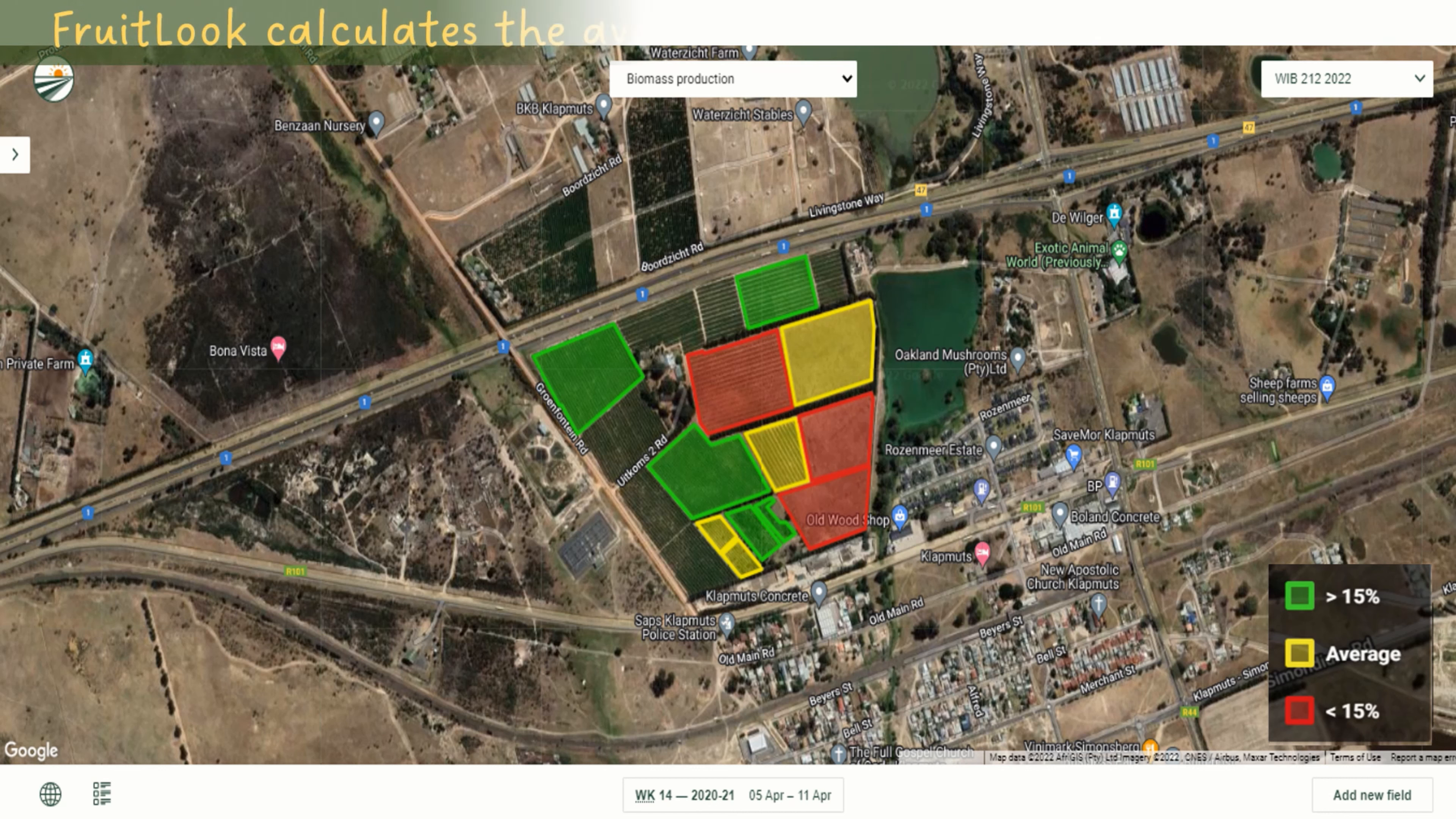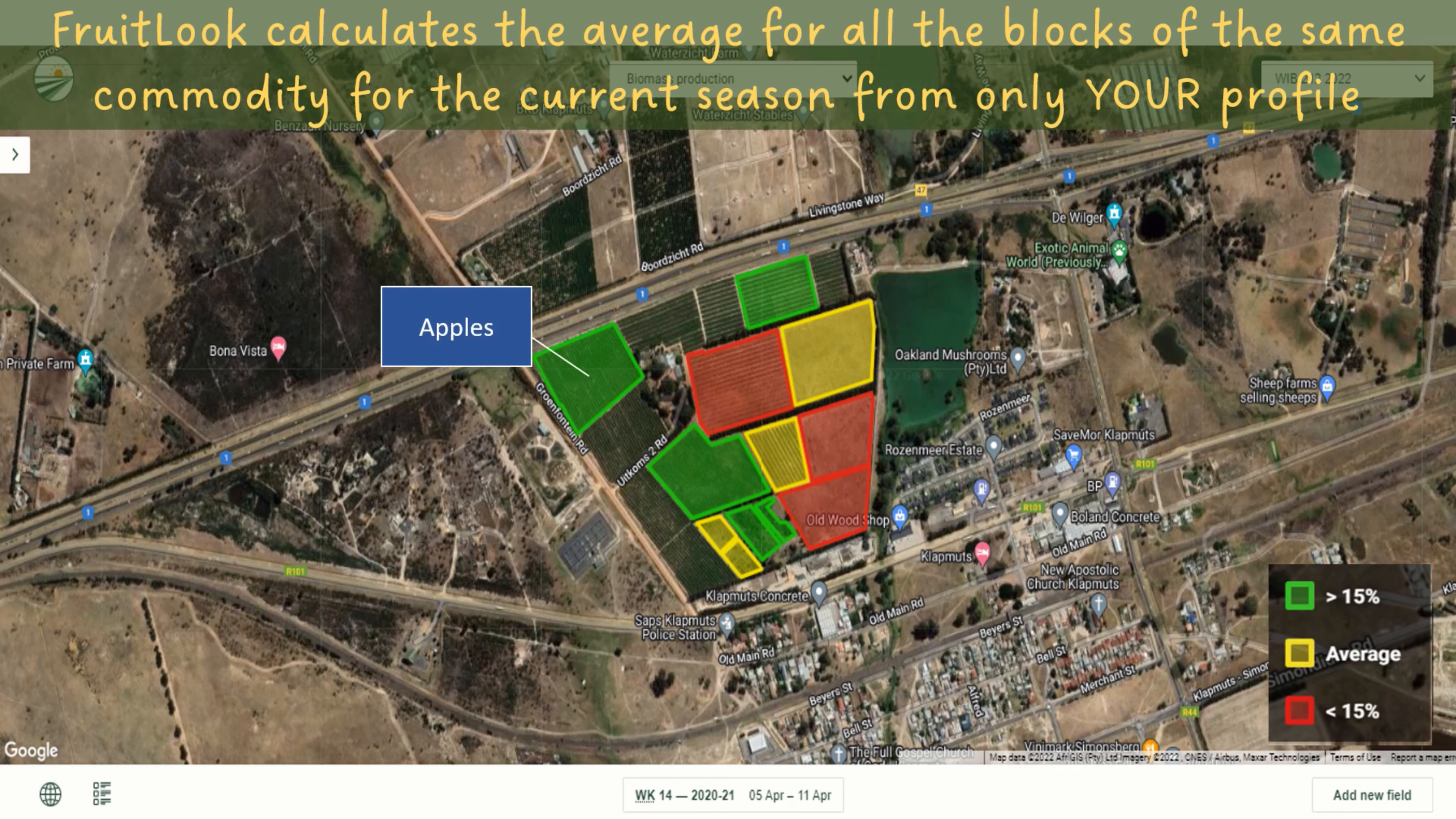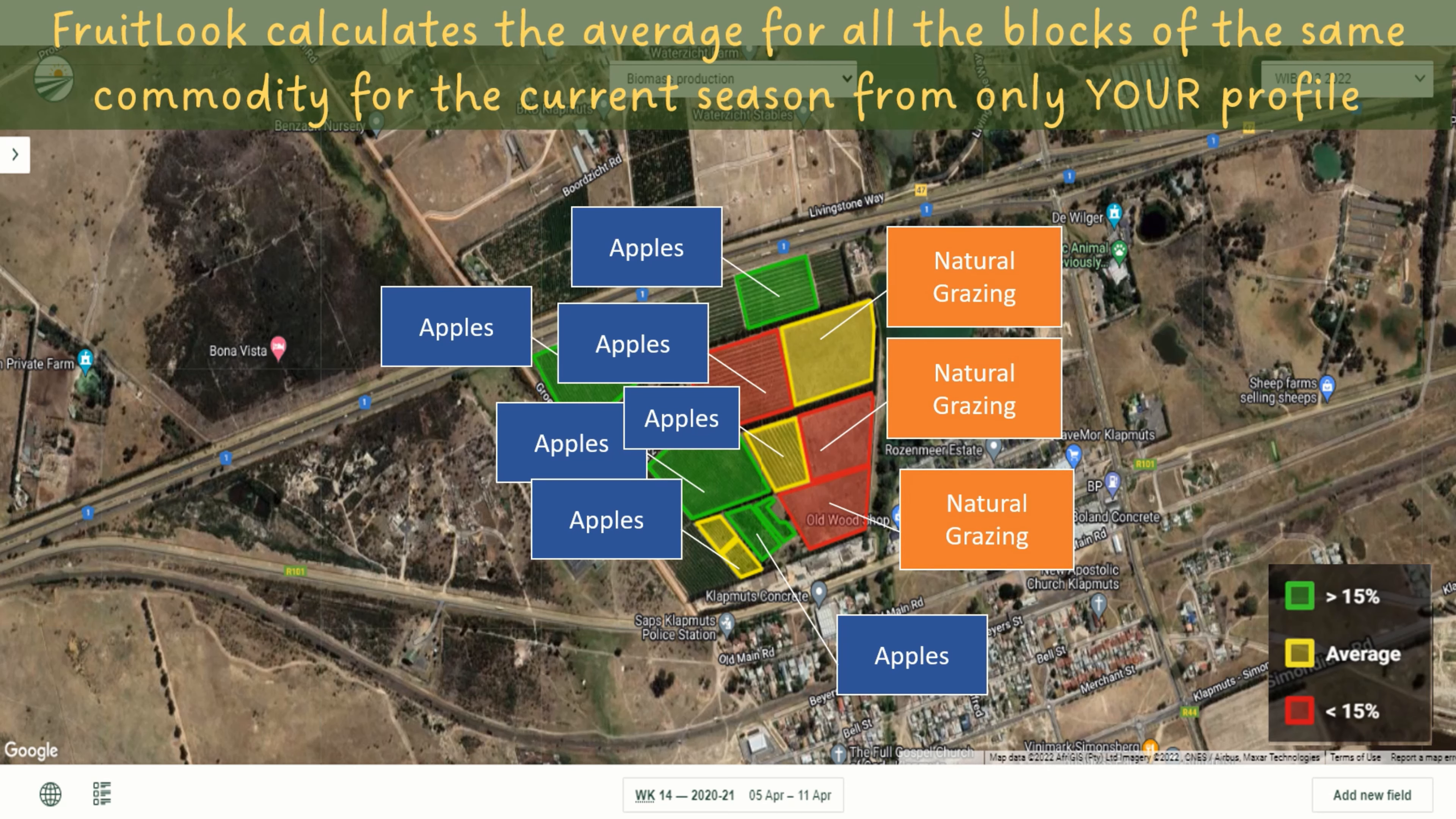Fruitlook calculates the average for all the blocks of the same commodity for the current season from only your profile. That means that the average for all the apple blocks and the average for all the natural felt blocks are separately calculated and compared.